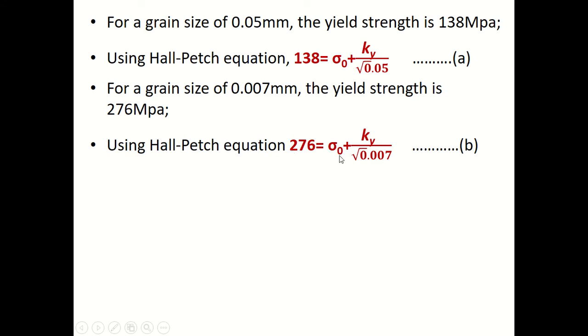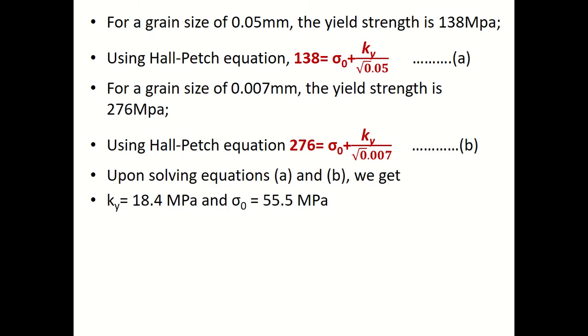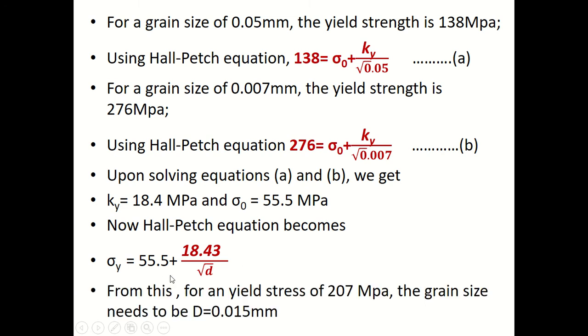Upon solving equations a and b, we get ky = 18.4 MPa and sigma o = 55.5 MPa. Now the Hall-Petch equation becomes sigma y equals 55.5 plus 18.43 divided by root d. From this expression, for a yield stress of 207 MPa, substituting we get the grain size as 0.015 mm.